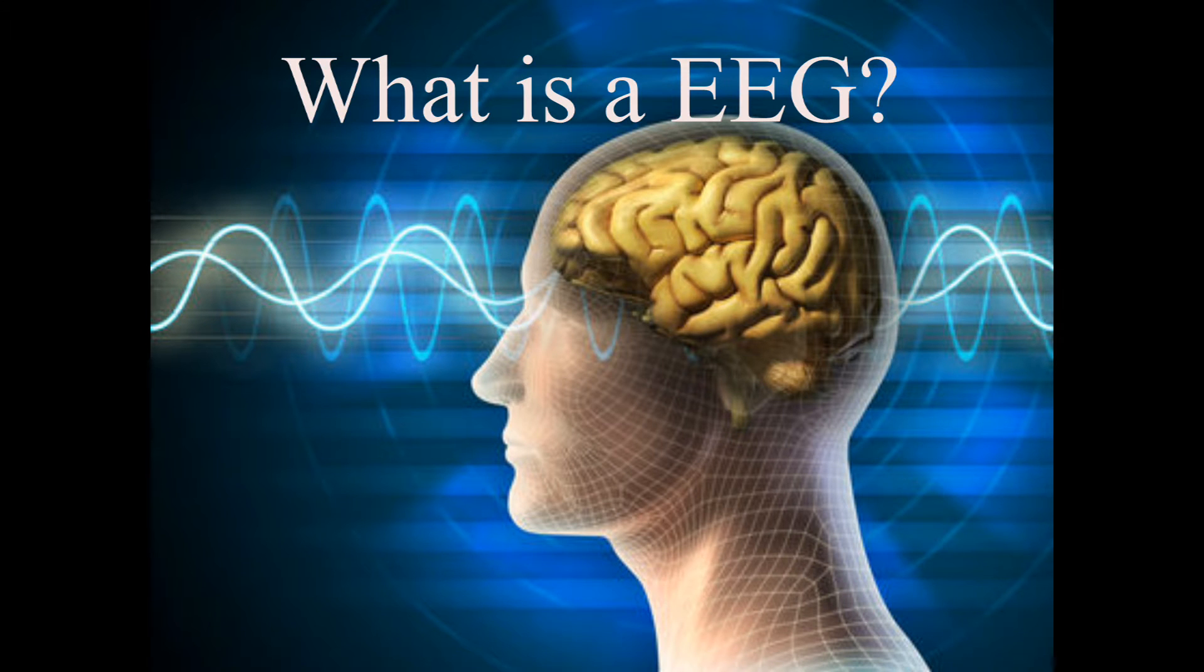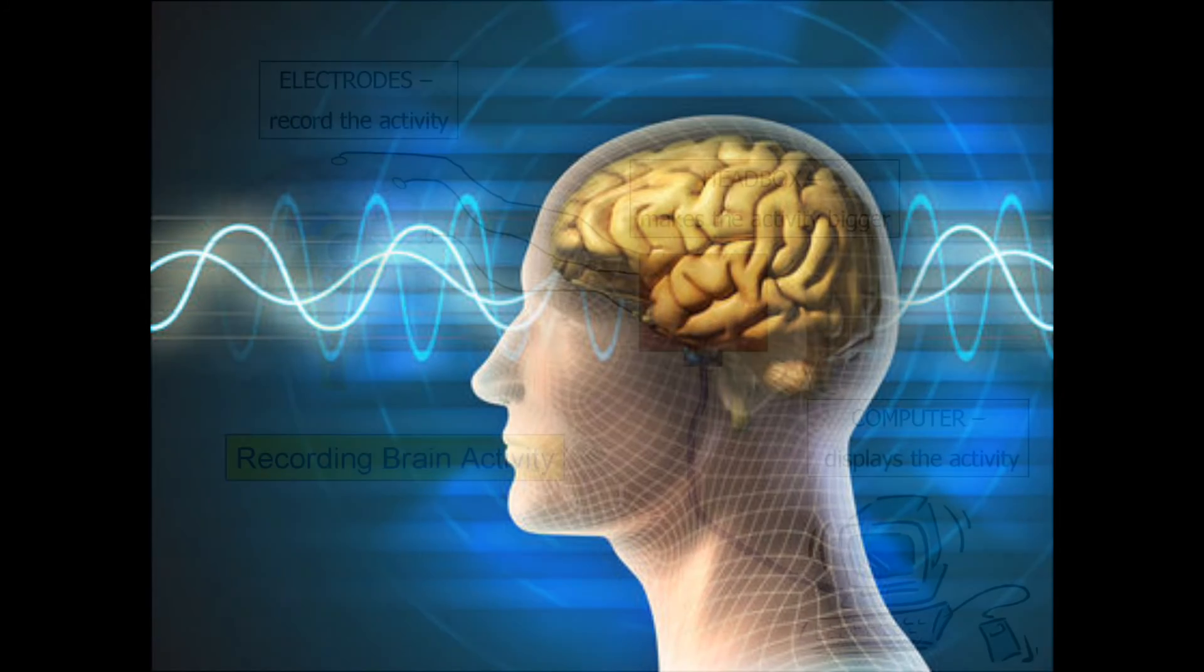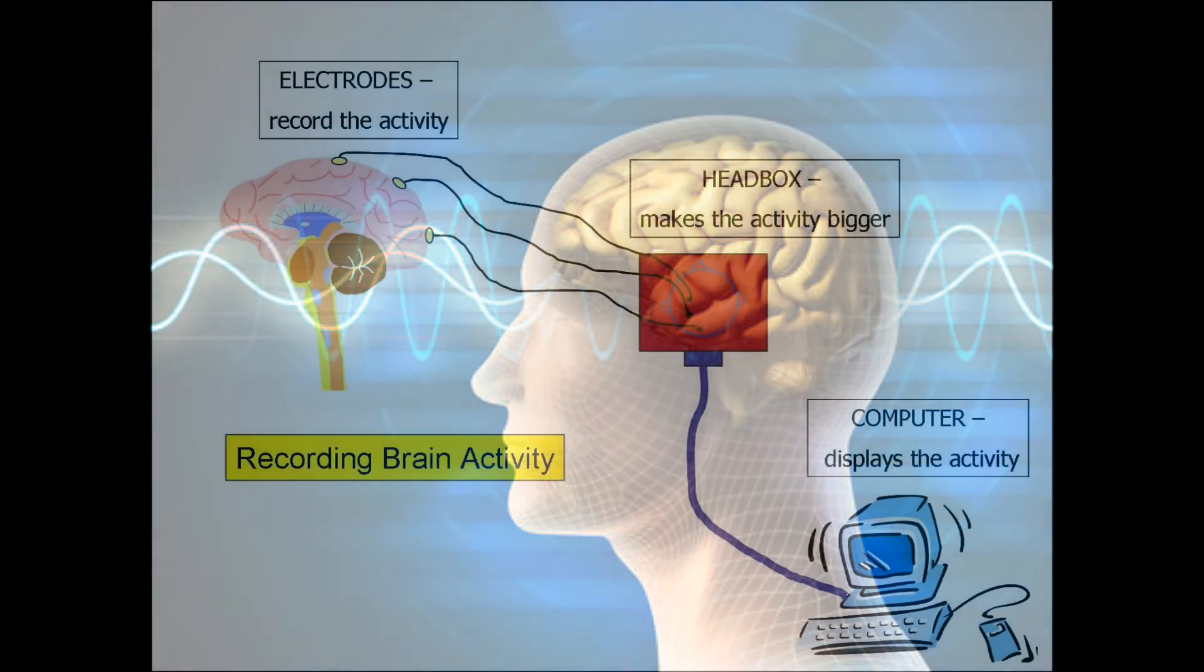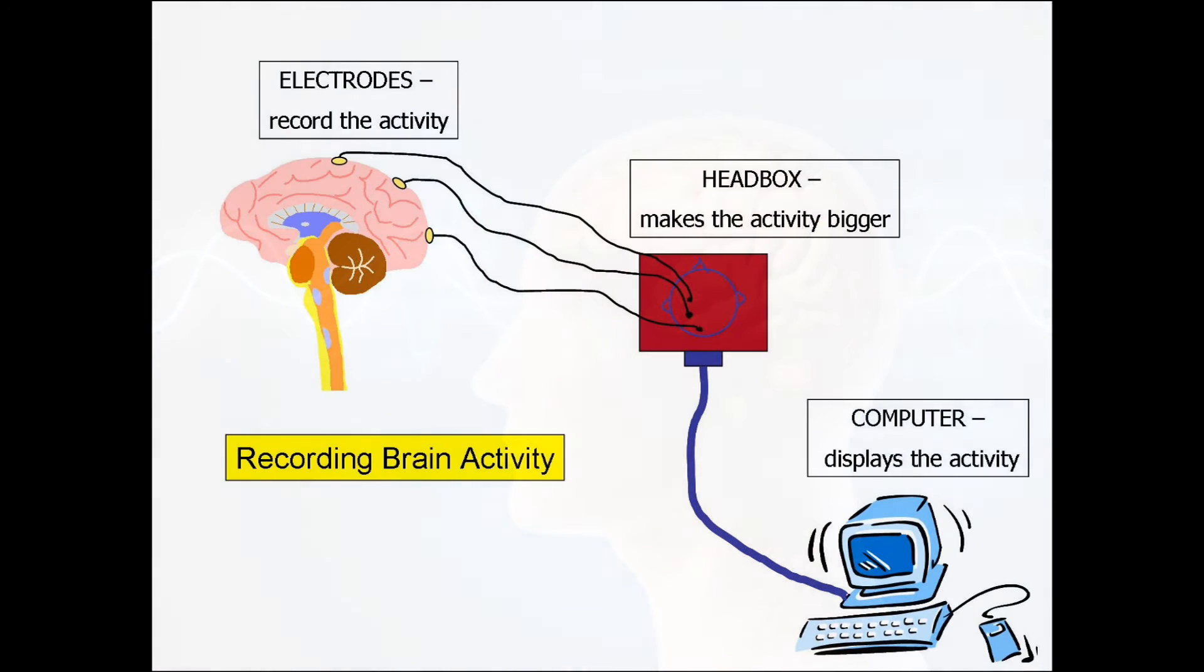The electroencephalogram is used for recording the electrical activity of the human brain. Electrical impulses generated by nerves in the brain can be captured by electrodes placed on the skull. The EEG gives a view of neural activity and has been used to non-invasively study the physiology of the brain.